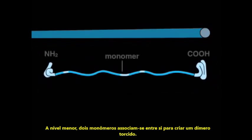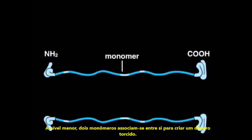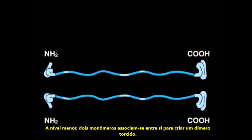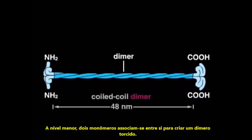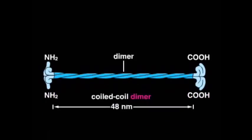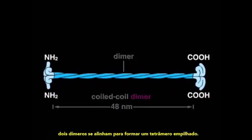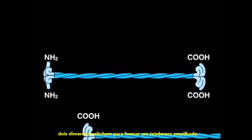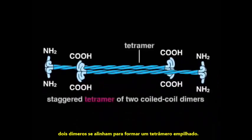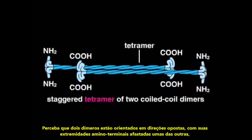At the lowest level, two monomers associate with each other to create a twisted dimer. Two dimers then line up to form a staggered tetramer. Note that the two dimers are arranged in opposite orientations, with their amino-terminal ends away from each other.